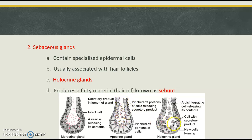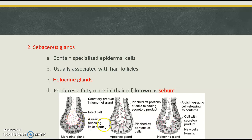With holocrine, entire cells are being removed into the ductwork, and slowly the cells themselves are broken down, releasing the secretions into the ductwork which then continues upward. So we have merocrine, apocrine, and holocrine — they're all very similar, yet different in how their secretions are actually released by the cells themselves.